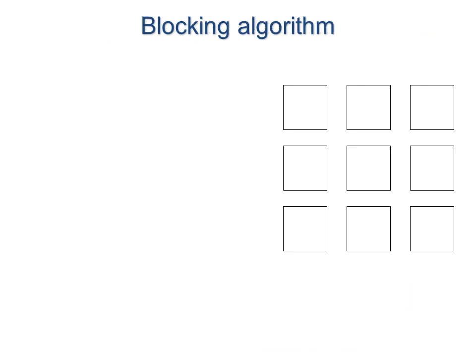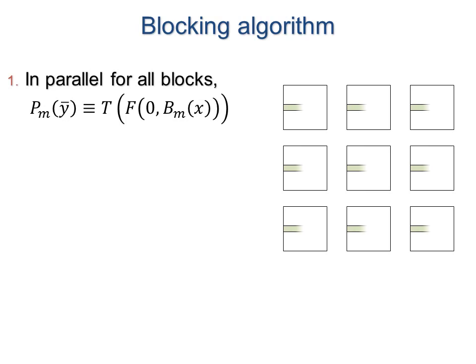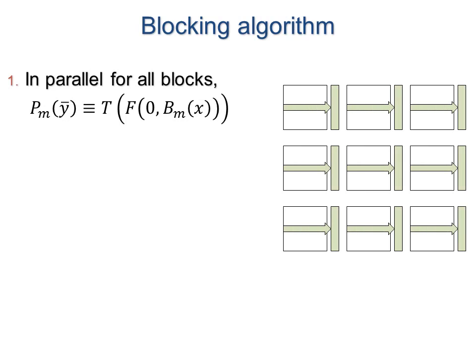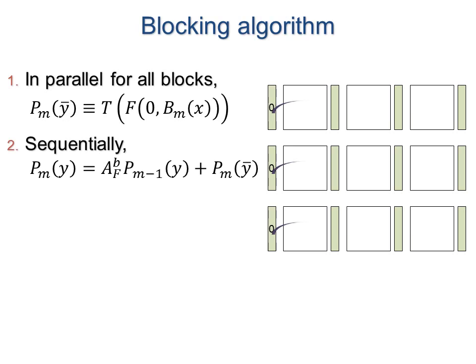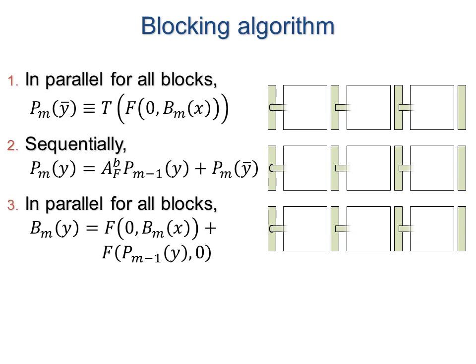Here is the resulting algorithm. Across all blocks in parallel, assuming a zero input prologue, we compute and store the incomplete prologue for the next block. Sequentially, we compute each prologue by combining the previous one and the incomplete prologue. Finally, across all blocks in parallel, given the prologue vectors, we compute and store the output for each block.